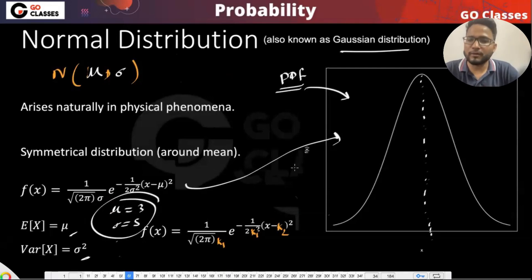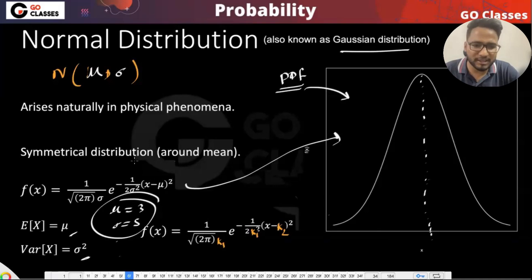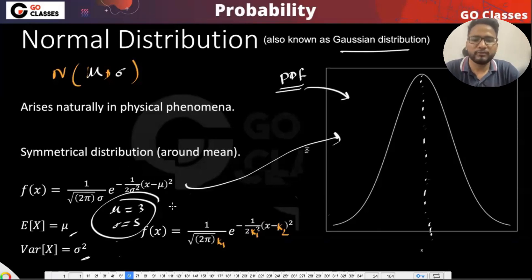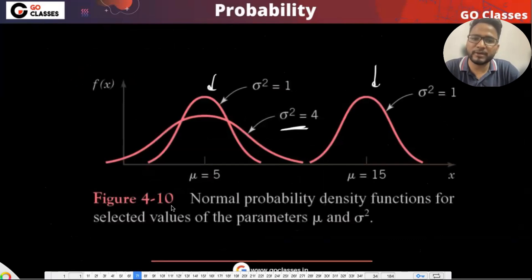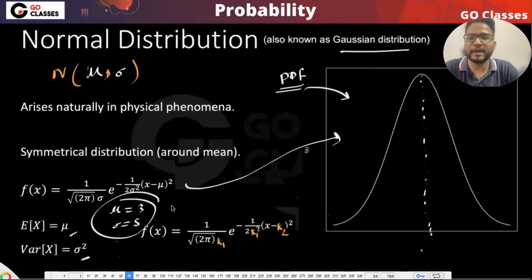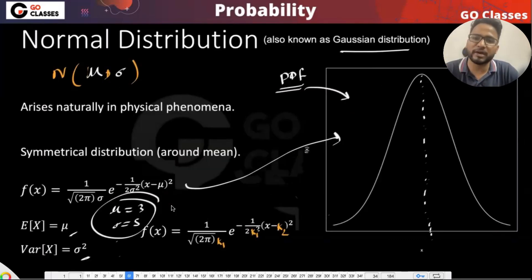For our purpose, we do not need many details — we do not even need the full PDF formula for the normal distribution. We just need to know how, given any random variable X, to convert it to a standard normal random variable Z.